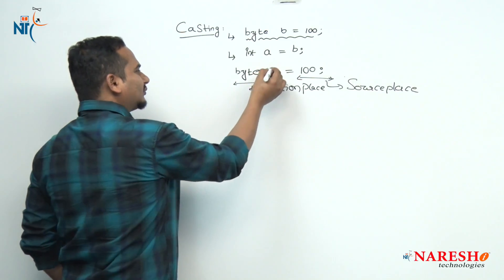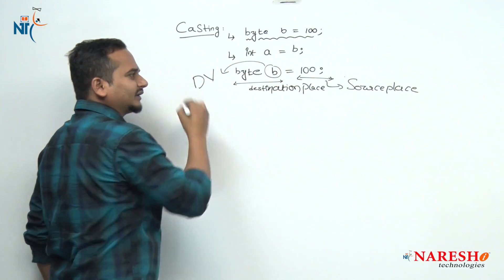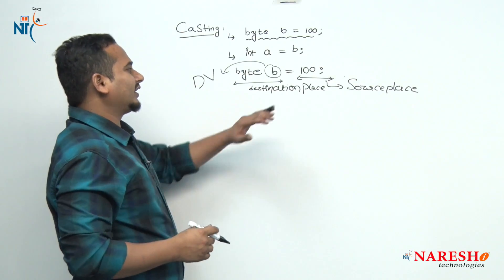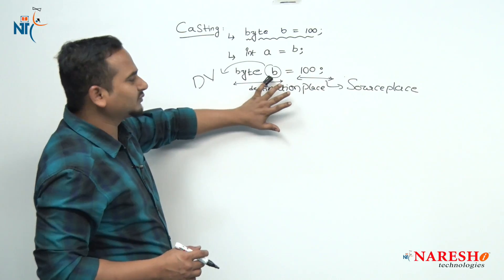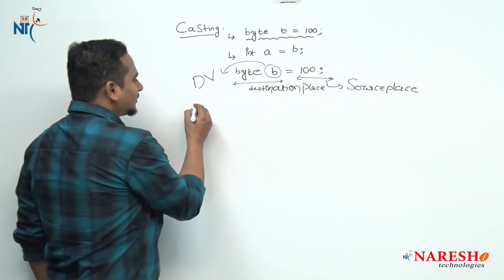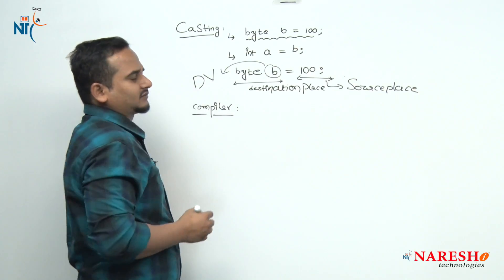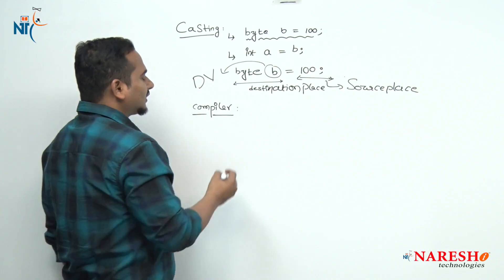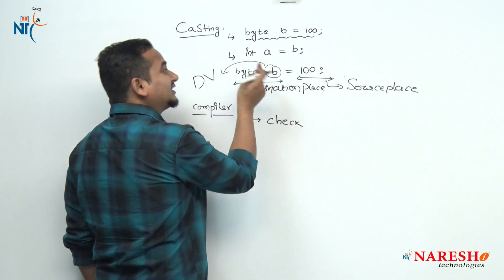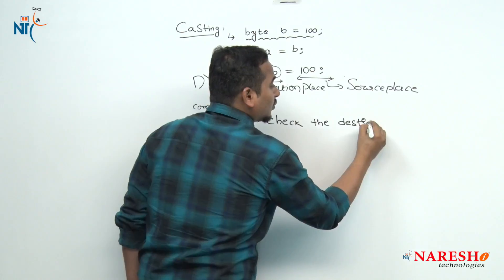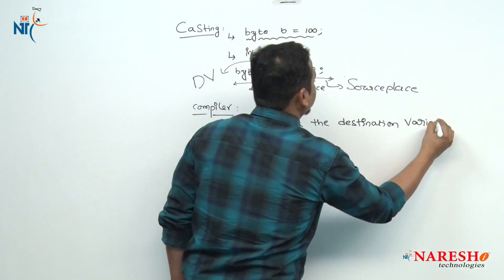The variable which is available in the destination place is called the destination variable. Whenever we assign a value like 100 into the variable b, first, what functionalities are done by the compiler? First, the compiler is going to check the destination variable type. What is the destination variable type here? Byte.